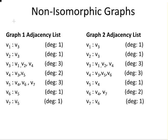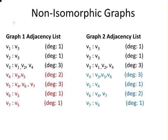But when I look at the rest of the list, we see that the elements of the list are different in each case. For V4, the graph one adjacency list for V4 is very different from the equivalent in graph two's adjacency list and likewise for V5, V6 and V7. So this is a very concrete way of demonstrating that the two graphs are actually not isomorphic.